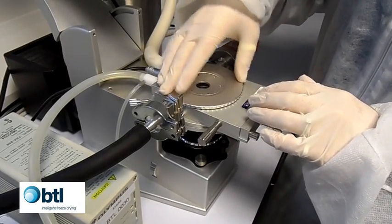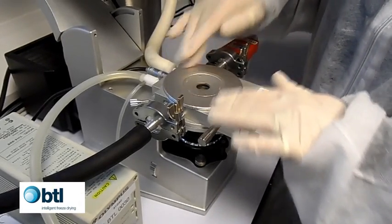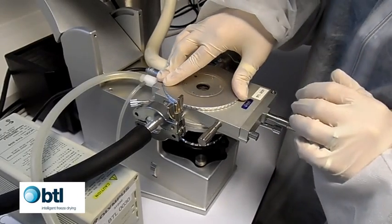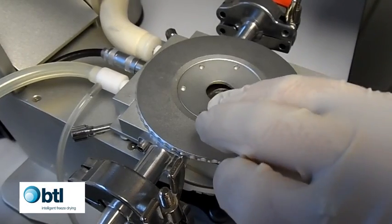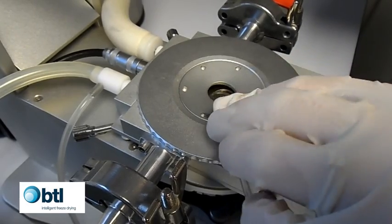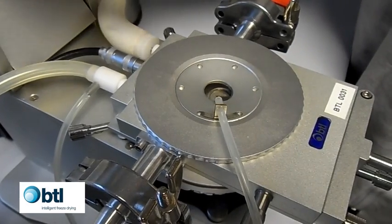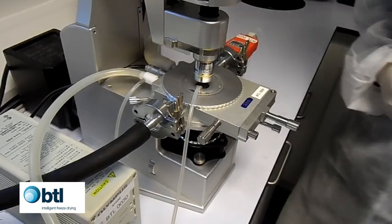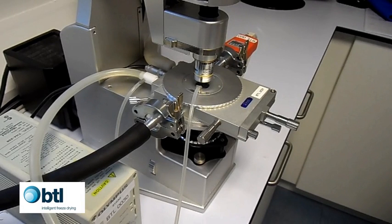Screw the lid back on, and clip on the tube so that recycled nitrogen gas can be used to prevent condensation forming on the lid during analysis. Replace the imaging station arm. Your Lyostat is now loaded and ready for use.